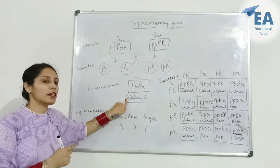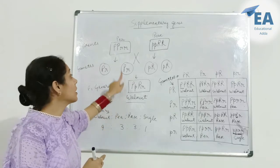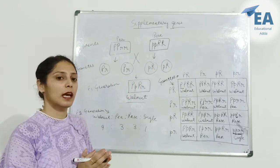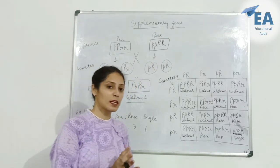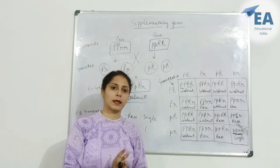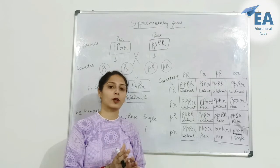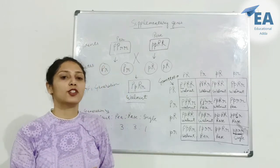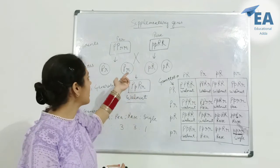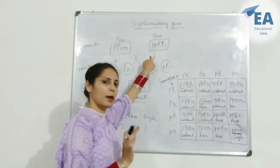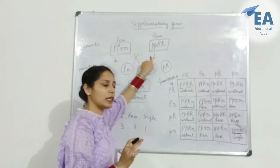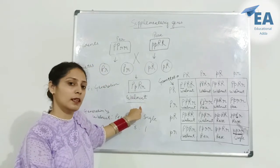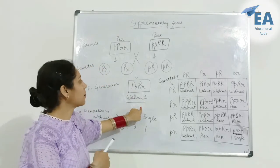In complementary genes, when the genes are present independently in dominant form, they show similar effects, but when they come together in dominant form they show a new effect. In supplementary genes, each gene shows its own different effect independently, but when they come together they produce a new trait.